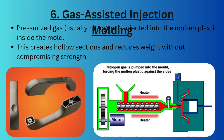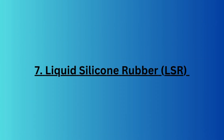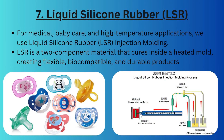If you need a hollow part with reduced material usage, we use gas assisted injection molding. In this process, pressurized gas — usually nitrogen — is injected into the molten plastic inside the mold, creating a hollow section and reducing weight without compromising strength. It is perfect for automobile panels, furniture, and large enclosures.